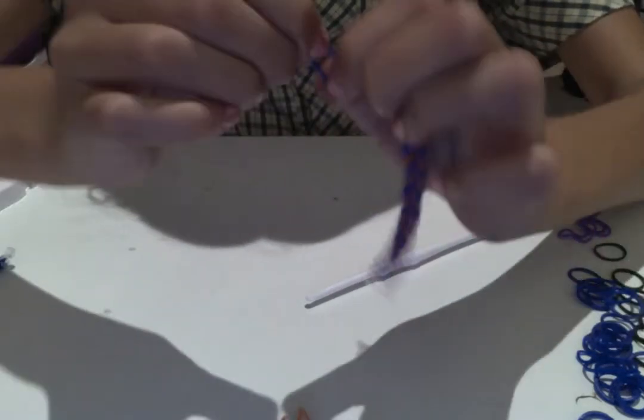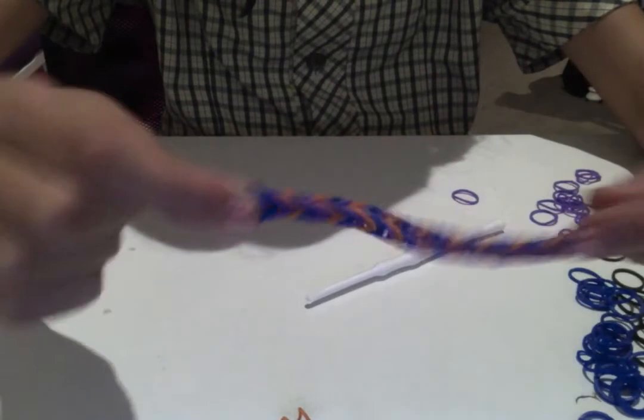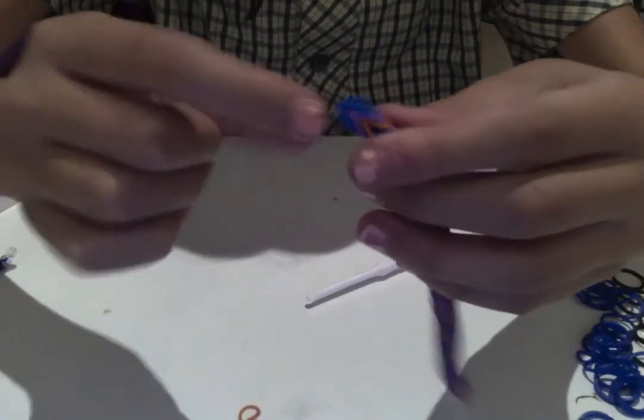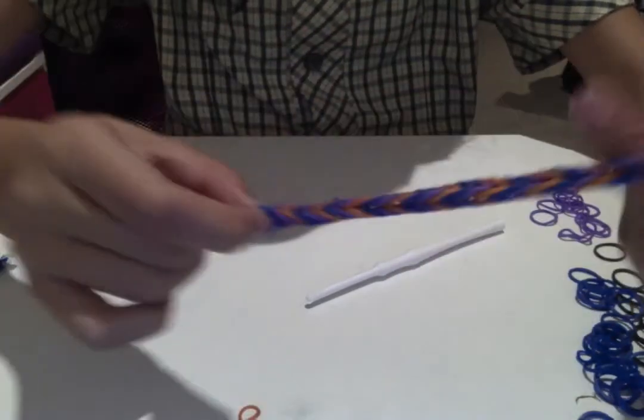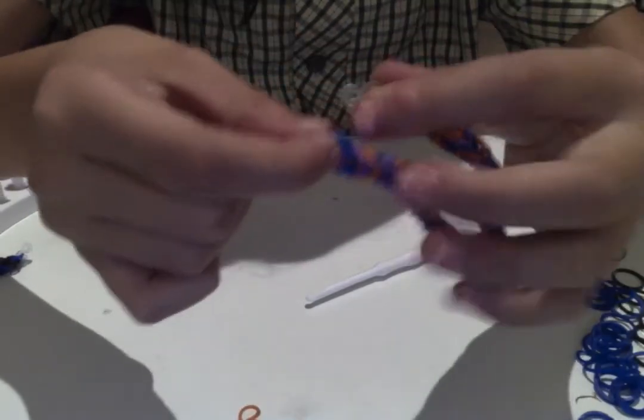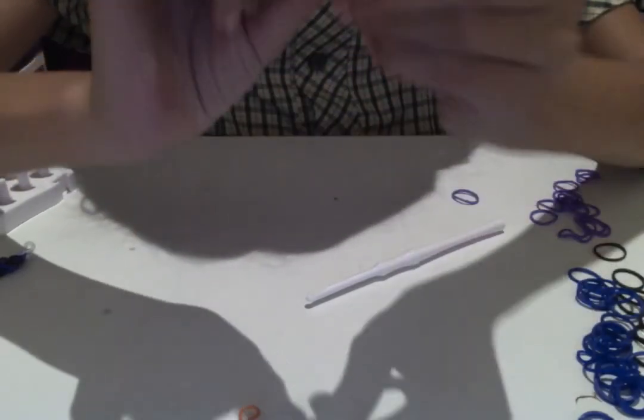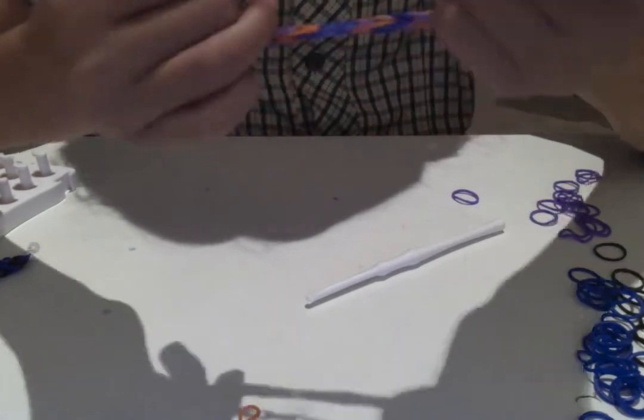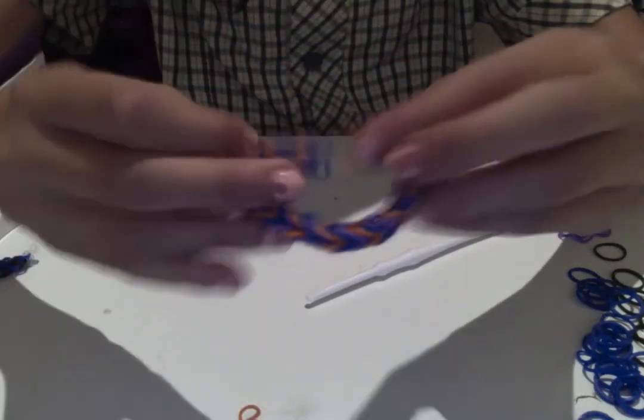So with my blue here, I grab—I open that with my fingers—and get the S-clip through like this. Like that. It looks really good.